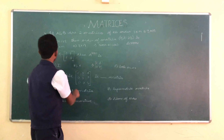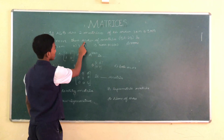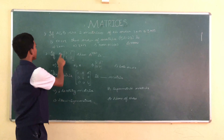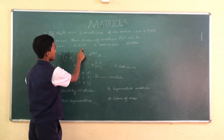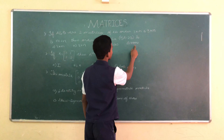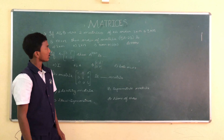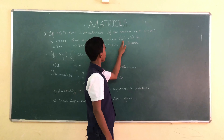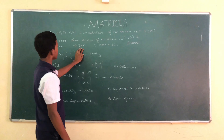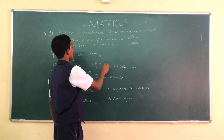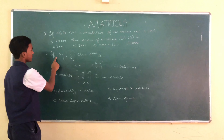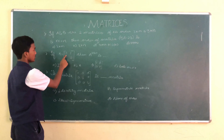Next question: if A and B are two matrices of order 3×m and 3×n, and m = n, then the order of matrix 5A−2B is: option A: 3×m, option B: 3×n, option C: both A and B, option D: none. Since m = n, 5A−2B is of order 3×m or equivalently 3×n, so the answer is option C, both A and B.